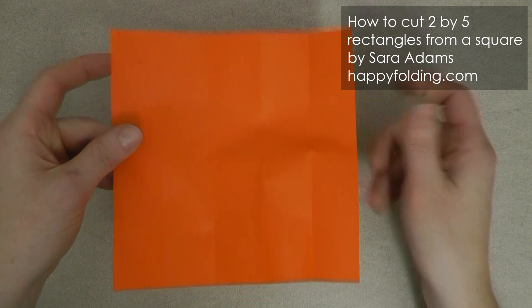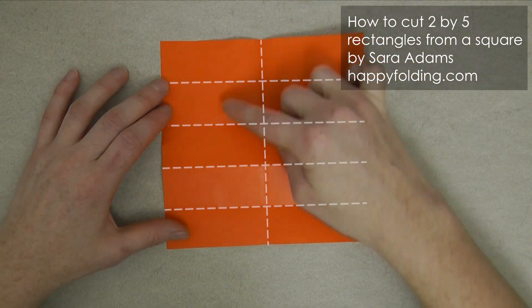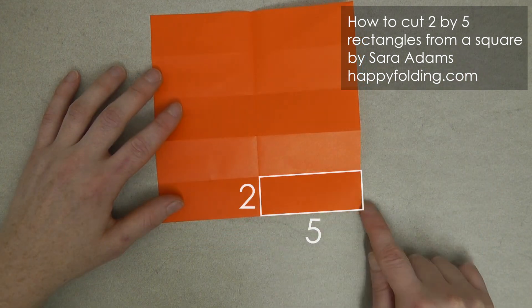Now, fold in half in the other direction. This gives you 10 rectangles, each with a ratio of 2 by 5.